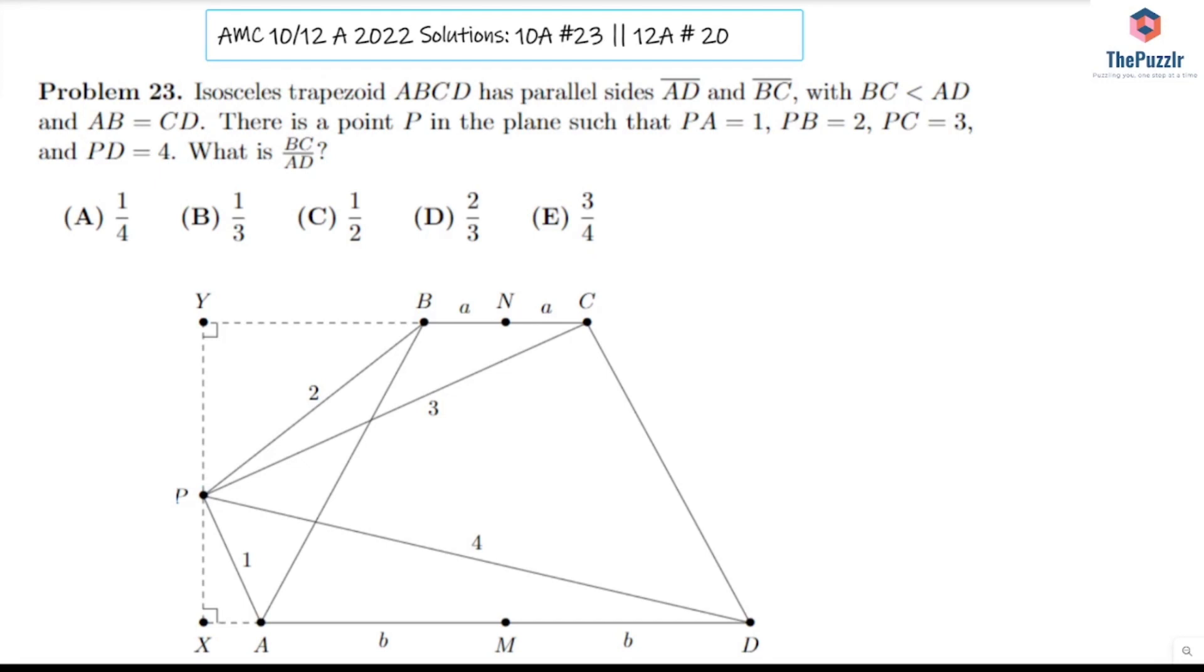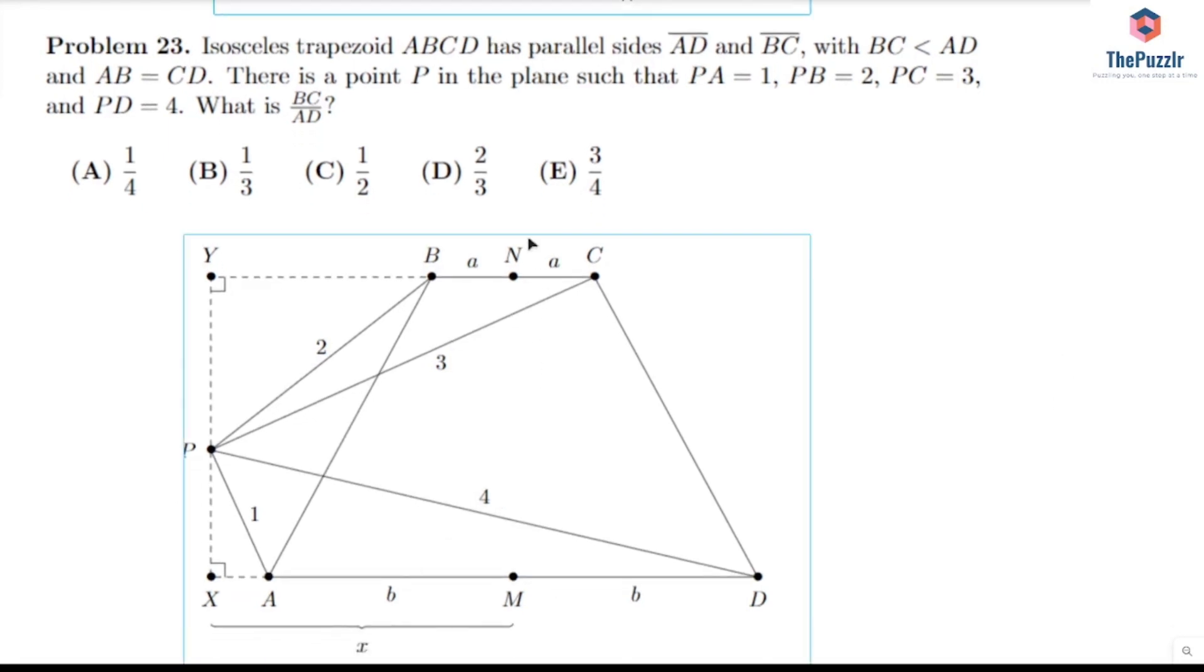Now I already went ahead and created a diagram. You could probably do something similar. Basically, we have that BN and NC are both, since N is the midpoint, they're both equal to A. Same thing for AD, AM and MD are equal to each other, and we called it B. Then I also drew X and Y, which is basically if you were to extend line BC and extend line AD so that P was on line BC and AD.